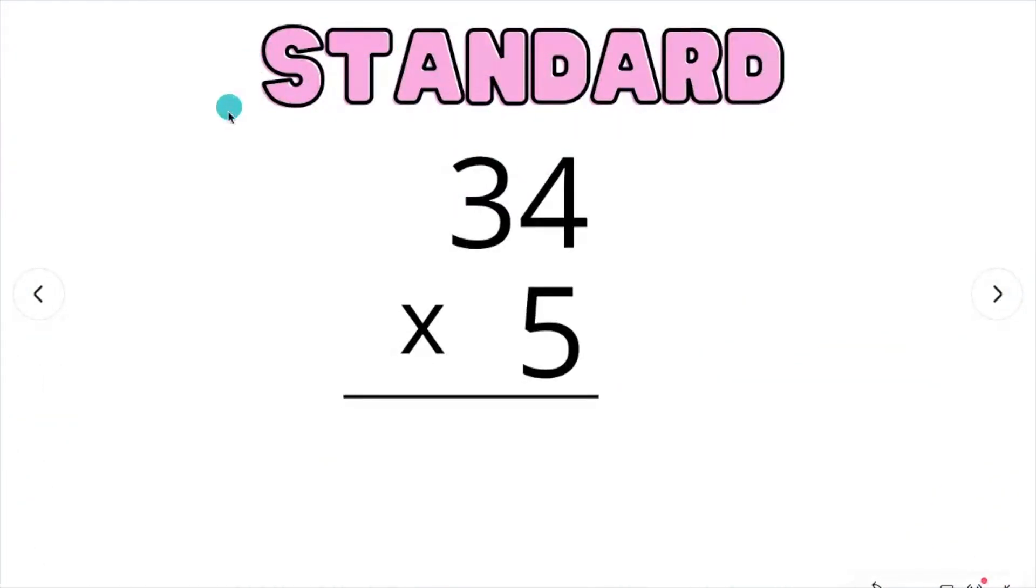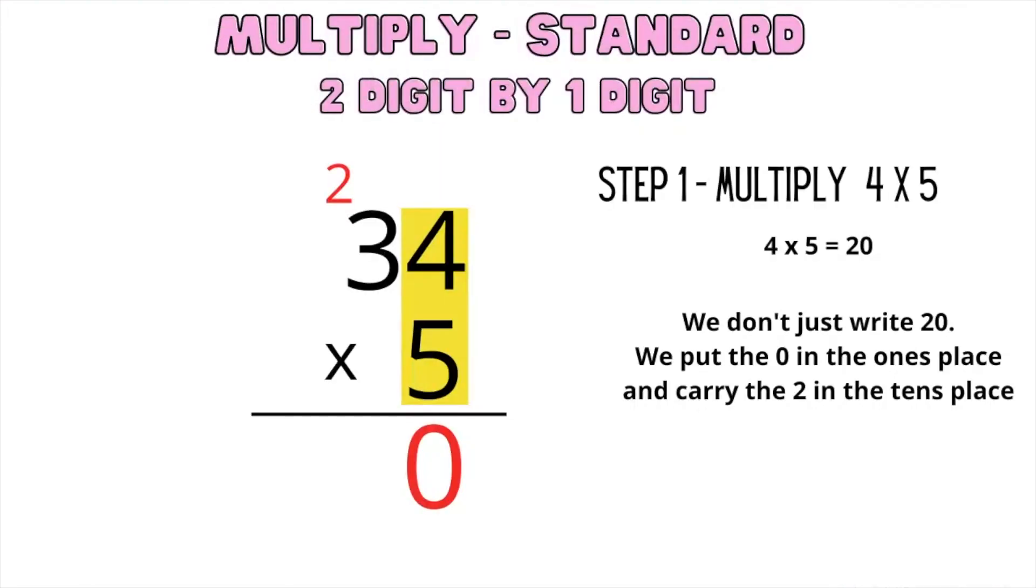First, we're going to multiply the standard way. We have the number 34 times 5. Step 1, we multiply the ones place, so the 4 times 5. We know that 4 times 5 equals 20, but we don't just write 20. We put the 0 in the ones place and carry the 2 in the tens place.